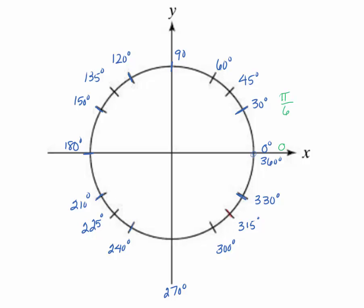What I want to do is just break up the circle. Instead of going every 30 degrees, we're going to count how many pi over 6s we have. To go from 30 to 60: at 30 degrees I have 1 pi over 6, at 60 degrees I would have 2 pi over 6, which is equal to pi over 3. So 60 degrees is equal to pi over 3.